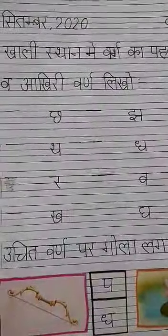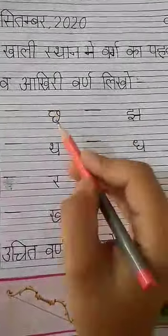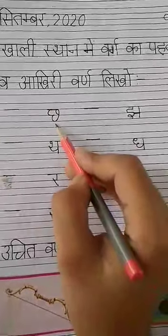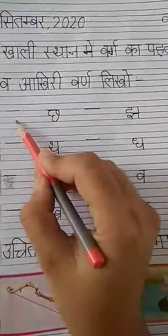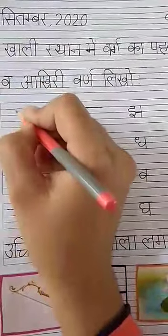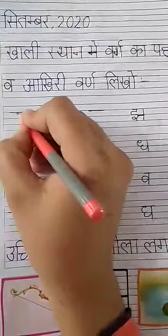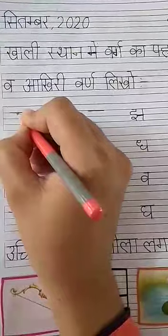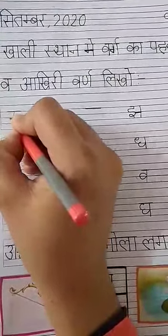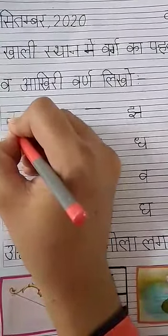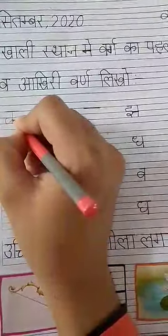Look at the movement of my hand. First, check what is this — Chh. So what do we write first? How to write Chh? Look at the movement of my hand and check the formation. Make a standing line, then a sleeping line, turn like this, touch this line and go slant up. Chh.